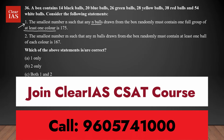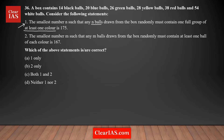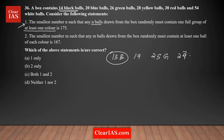In these kinds of situations, you consider the worst case scenario — you try to select the maximum number of balls without satisfying the condition. The condition is you need to select at least a full group of at least one color. There are 14 blacks, so the maximum you can select without completing that group is 13. Similarly, from 20 blue you select 19, from green 25, then 27 yellow, 37 red and 53 white. The total is 174 balls.